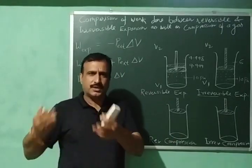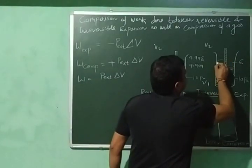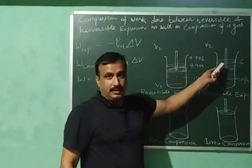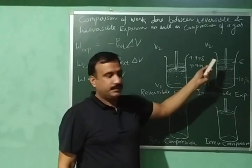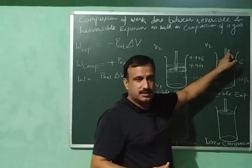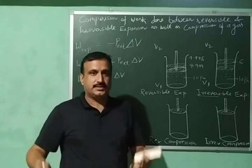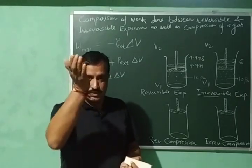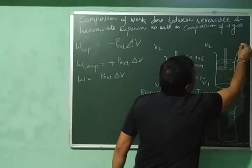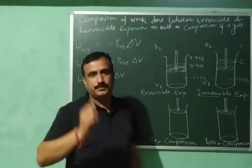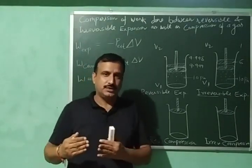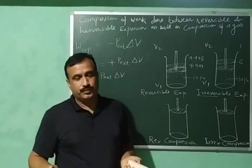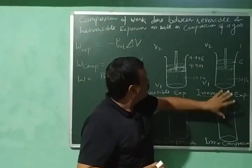Supposing the process takes place in small steps, the piston moves to a new position and equilibrium is restored with internal pressure equal to 6. Then in the second step, I decrease the external pressure significantly again — to 1. The gas expands immediately. By following these steps, we reach the final volume V2, and this is how irreversible expansion takes place.